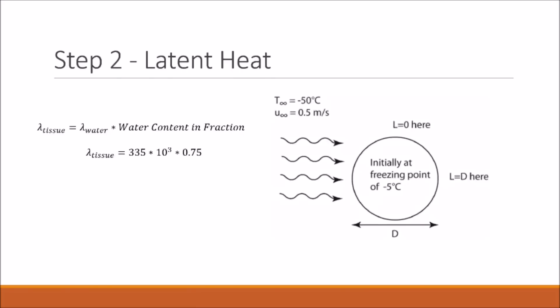The next step is to find the latent heat. Because we're only freezing the water within the paddy, we need to determine the latent heat of the tissue by taking the latent heat of water and multiplying it by the water content inside the paddy. We're told there is 75% water in the paddy, so we multiply the latent heat of water by our water content in fraction form to determine our latent heat of the tissue.